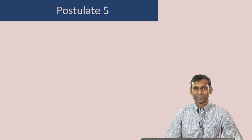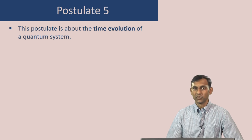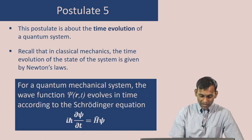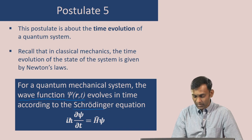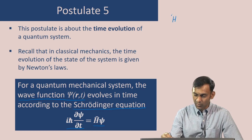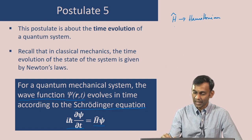Let us now look at postulate 5. This postulate tells us about the time evolution of a quantum system. Recall that in classical mechanics, the time evolution of the position and momentum of a particle was given by Newton's laws. In quantum mechanics, the time evolution of the state of the system — the wave function, which is a function of position and time — is given by the Schrödinger equation: i·ℏ·(∂ψ/∂t) = Hψ. H, as we have talked about before, is the Hamiltonian operator, which corresponds to the total energy — the kinetic energy and the potential energy — so this is the total energy operator.